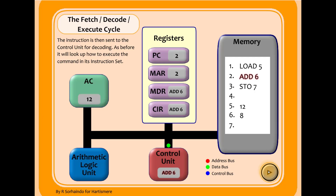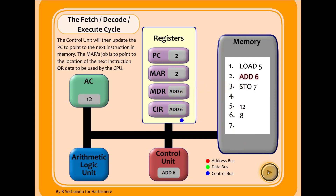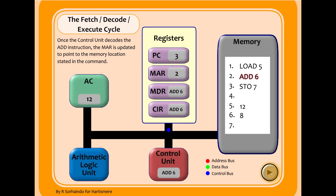The decode stage determines that 'add 6' means: add whatever is in memory address six to the current value of the accumulator — it's not adding the number six, it's adding whatever is stored at address six. The control bus increments the program counter to three to prepare for the next fetch, then updates the memory address register to six. The address bus and control bus then fetch the data from memory address six, which holds the value eight.